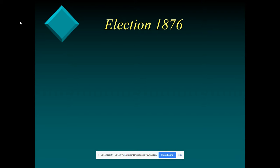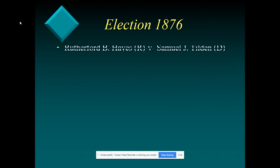All right, guys, we're wrapping up our Gilded Age PowerPoint lecture from the other day. One of the last things we talked about was Ulysses S. Grant and the scandals that kind of plagued his presidency. One was the Whiskey Ring Affair, and the other was the Credit Mobilier scandal regarding the railroad. So it is again the era of good stealings.